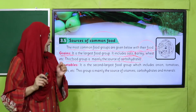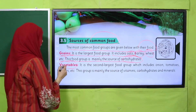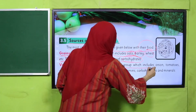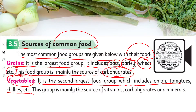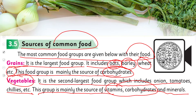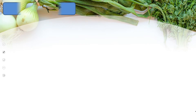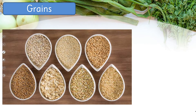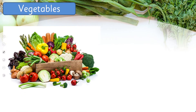Next comes vegetables — it is the second largest food group, which includes onions, tomatoes, chillies, etc. This group is mainly the source of vitamins, carbohydrates, and minerals. After grains, the second biggest group is vegetables, and they provide carbohydrates, minerals, and vitamins.